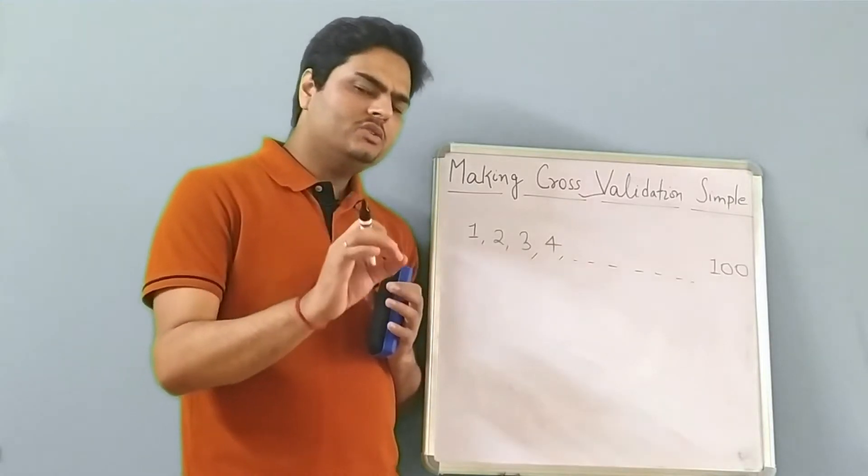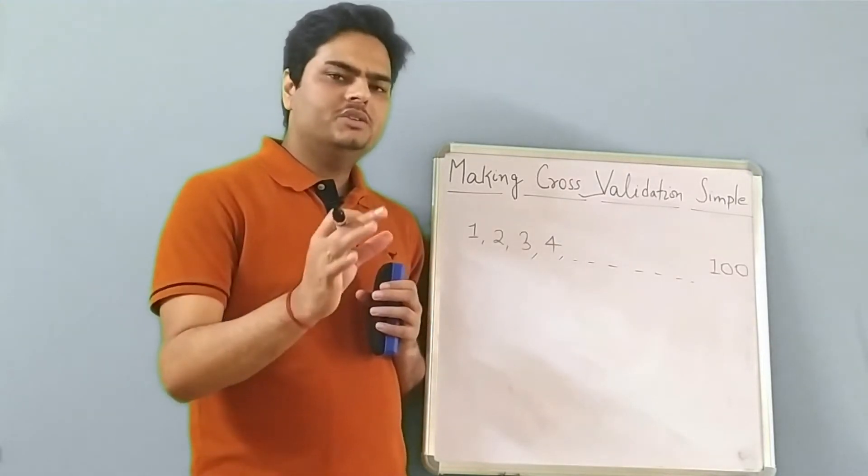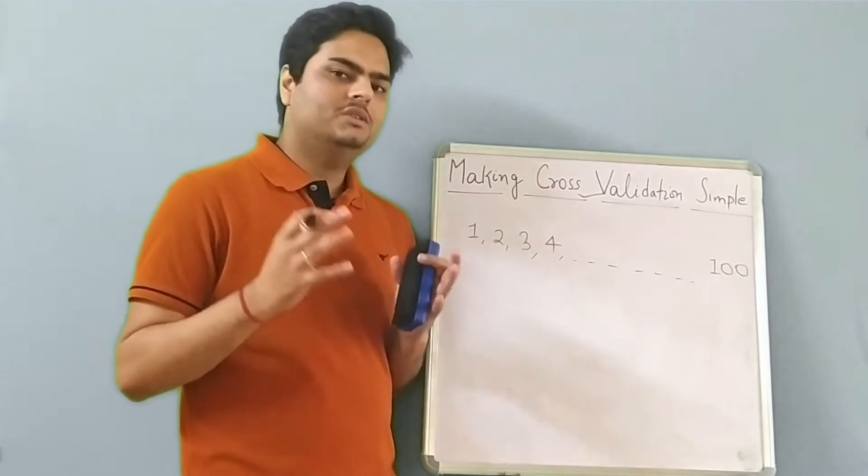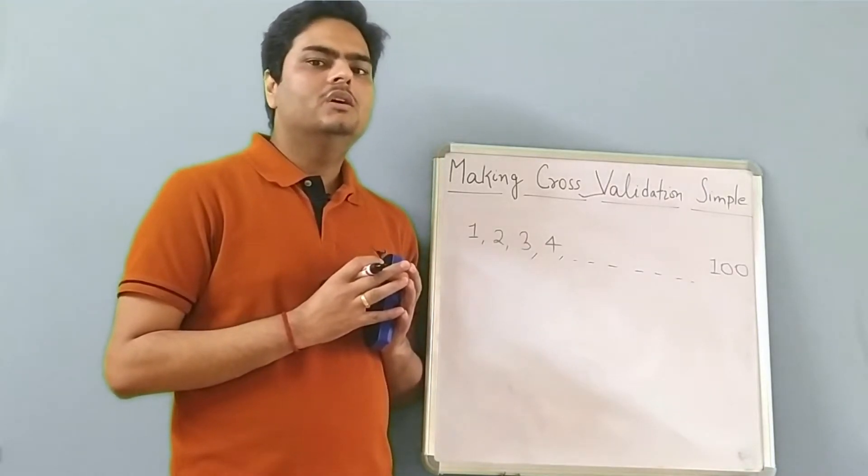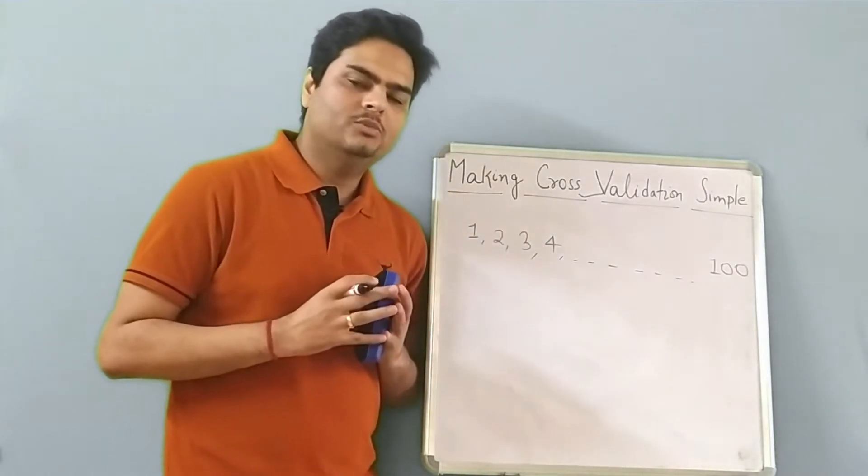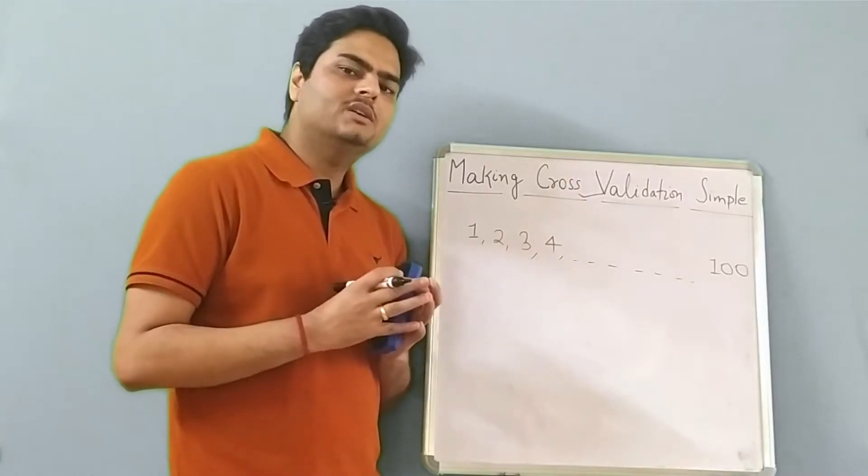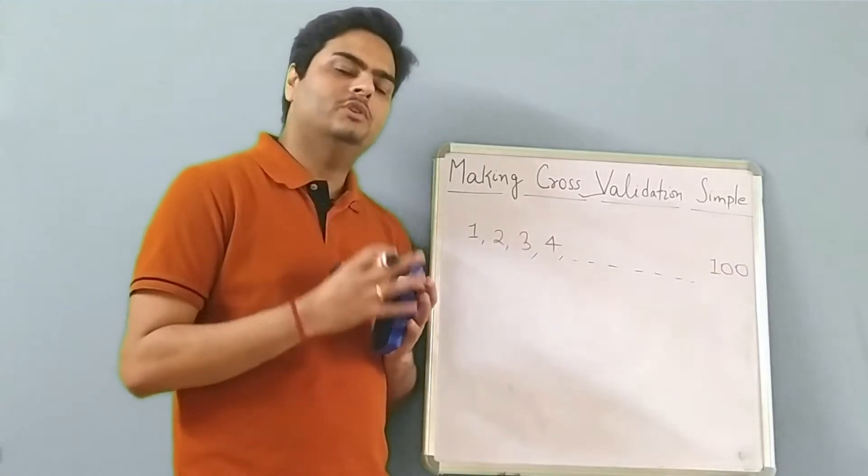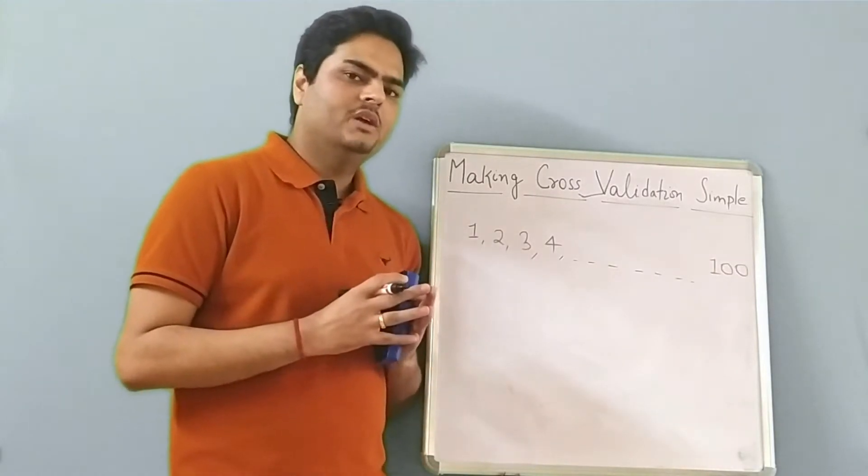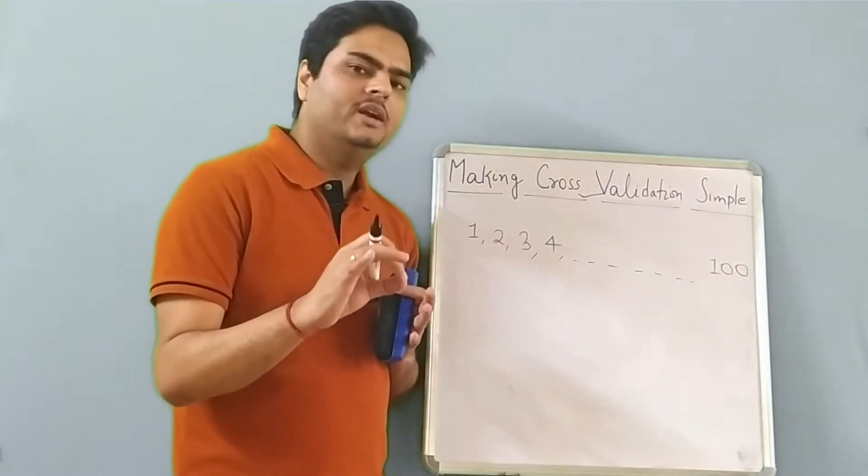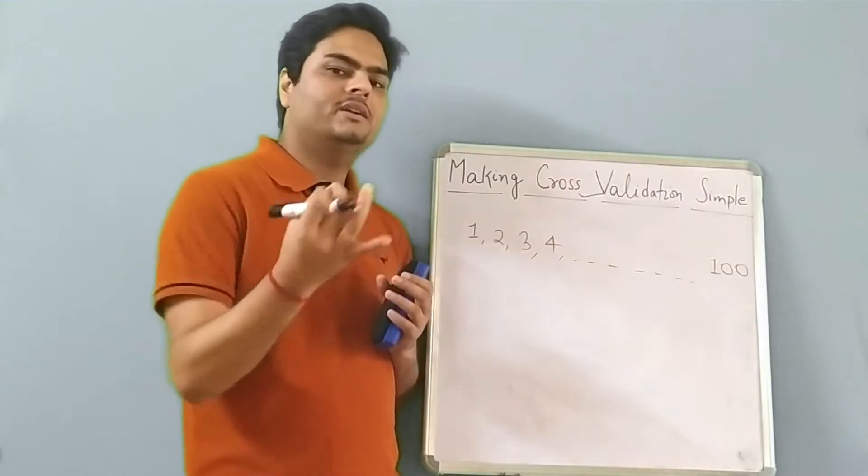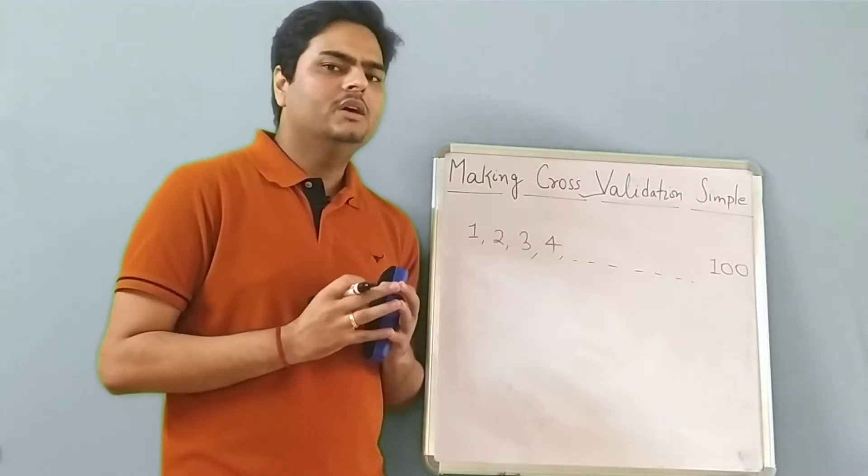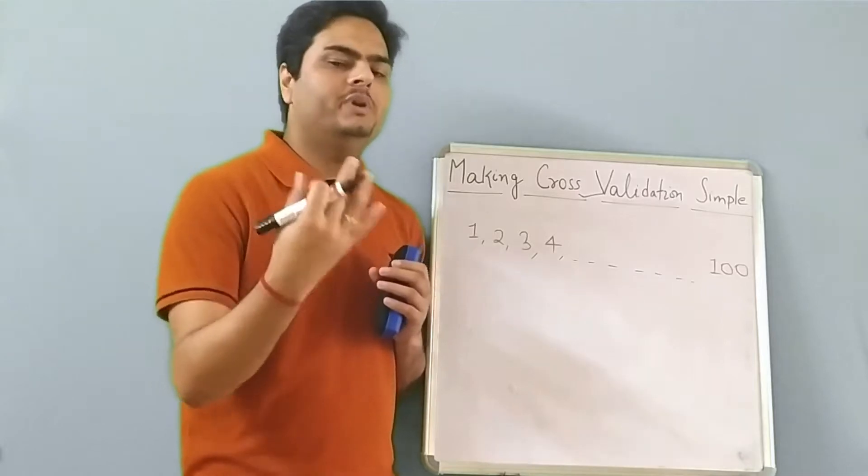Now to understand cross validation, let us take the example of a real world scenario. Let us say some of your friends go to watch a movie. And then your friends come back, let's say five people went, and you ask one of your friends, how was the movie? Maybe that particular friend is a fan of that particular actor who was in that movie. He may give a biased opinion.